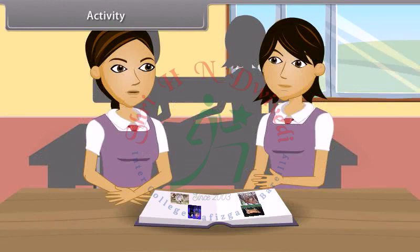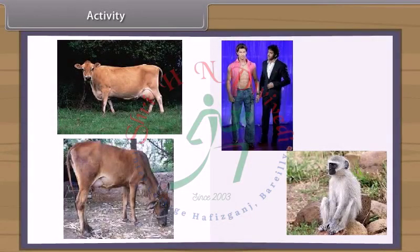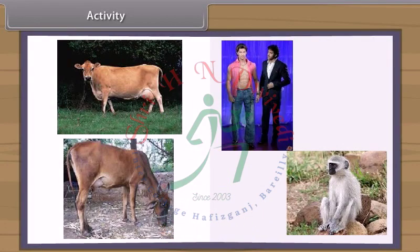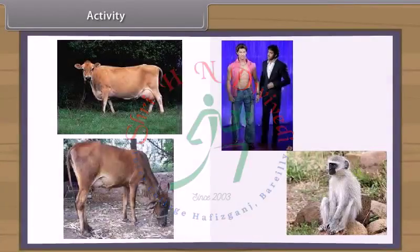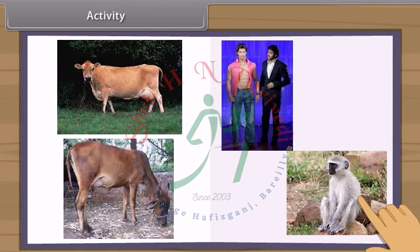Let us do an activity to find out the similarities within a genus and differences among various genera. When we study physical characters of desi cow and jersey cow, we find very few differences. But jersey cow can be distinguished from a distance due to its height and stature. When we look at a cow and a monkey, we find that man resembles more to a monkey than a cow, although all are mammals.